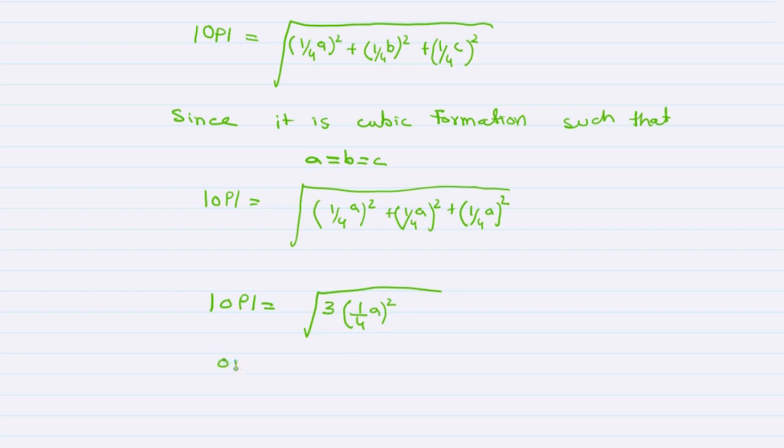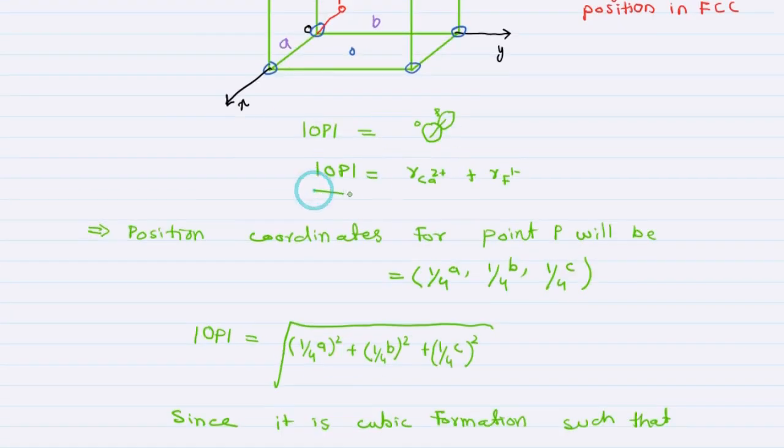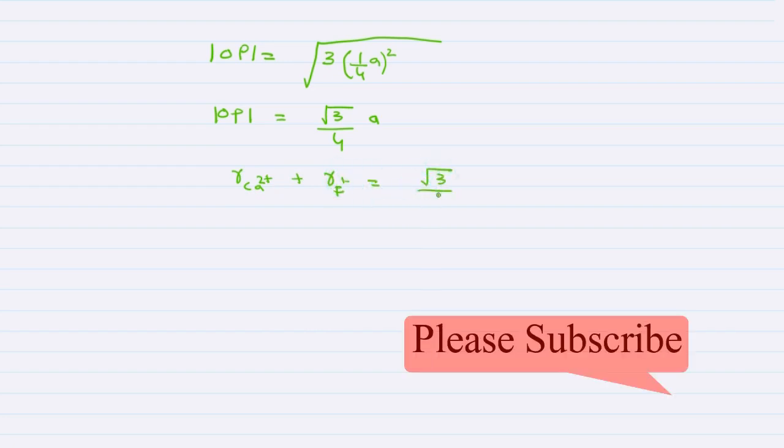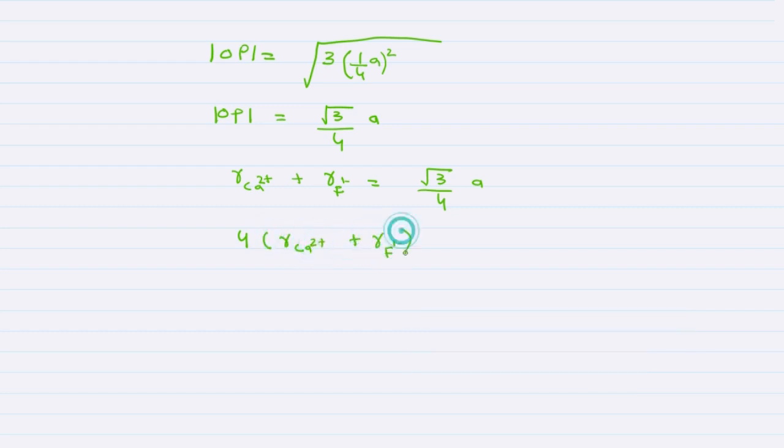We know that OP equals the radius of calcium ion plus radius of fluorine ion. Replacing OP gives us r_Ca + r_F equals √3 divided by 4A. Therefore, 4(r_Ca + r_F) equals √3 times A. This is the solution.